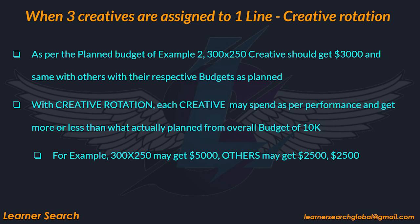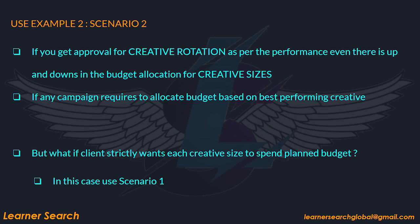For example, the medium rectangle may receive $5,000 while the others could receive $2,500 and $2,500 respectively. You can use this scenario if you get approval for creative rotation based on performance, even though the budget allotment for creative sizes fluctuates. This campaign structure may be used for any campaign that requires budget distribution based on the highest-performing creative. But if your client strictly wants each creative size to spend as planned, then you can create a separate line item for each.